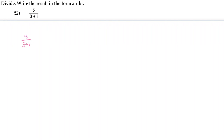If we recall what i stands for, it stands for the square root of negative 1 by definition. And also, i squared stands for negative 1. So, we're not allowed to have this i in the denominator, so we have to figure out a way to manipulate the expression so that it's not in the denominator.